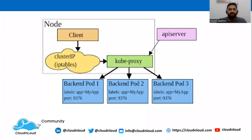In the cluster, you can apply networking by using CNI plugins, which is also known as Container Network Interface. The most popular ones are Weave Net, Calico, and Flannel.